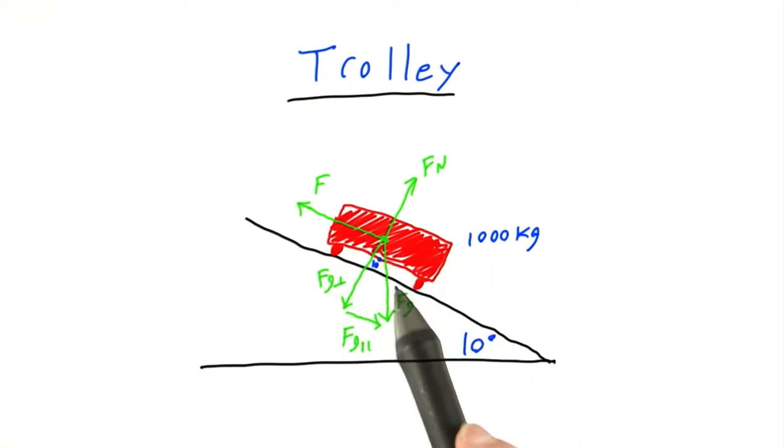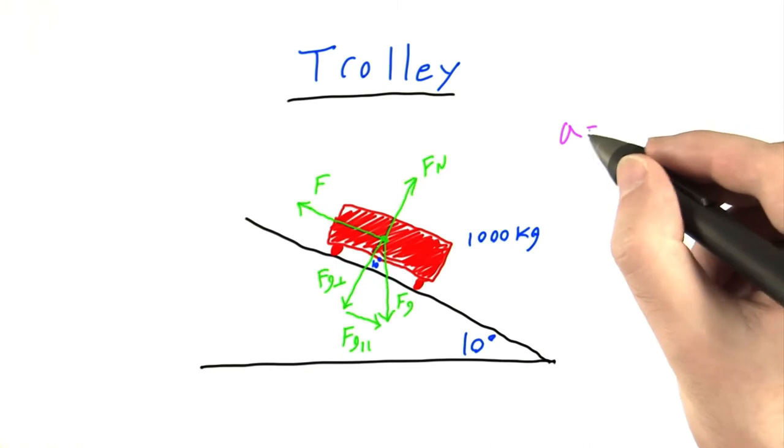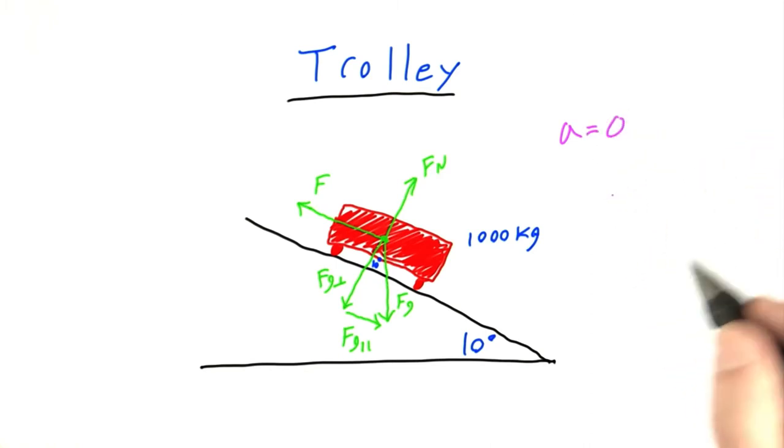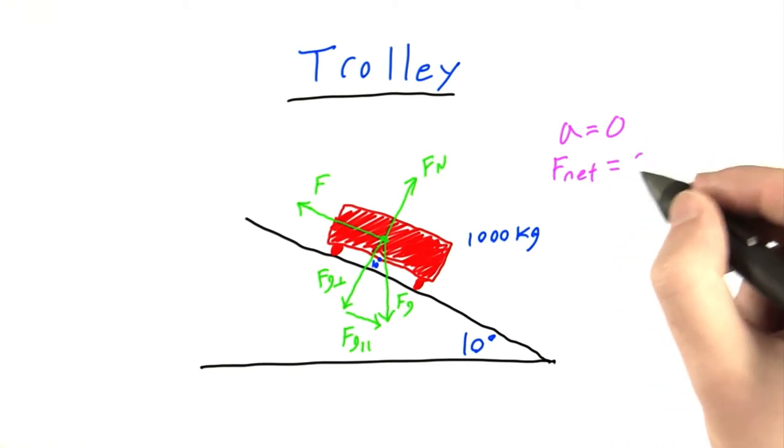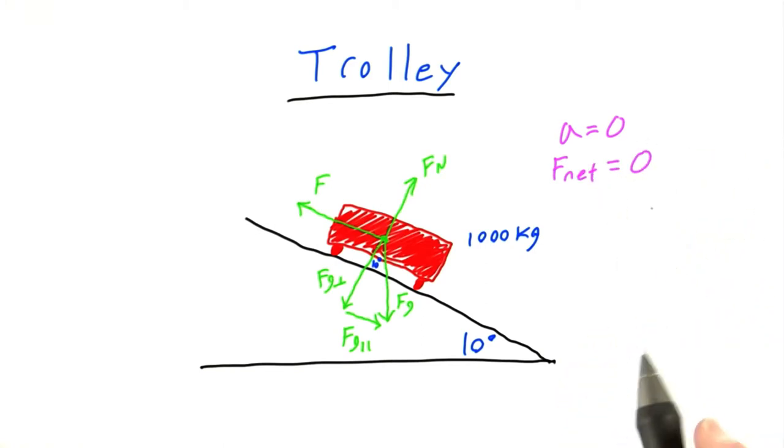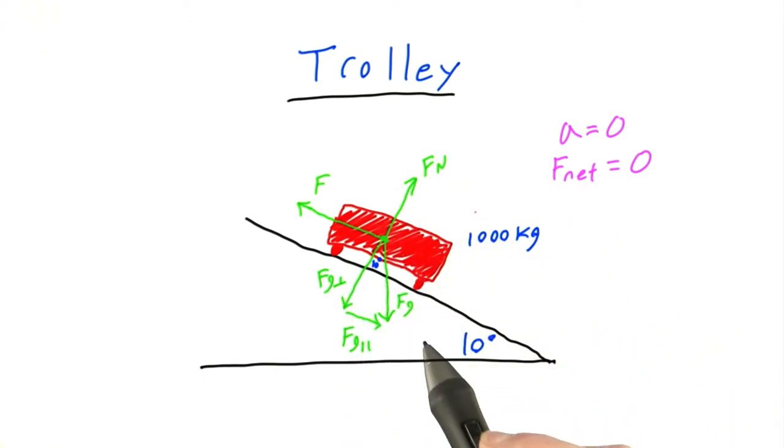All right, now we know that we want this trolley to move at a constant velocity, which means that it can't be accelerating. So acceleration has to be 0. And if it's not accelerating, that means there can't be any net force acting on the trolley. So the net force also has to be equal to 0. And if the net force is equal to 0, that means all of these forces perfectly balance each other out.